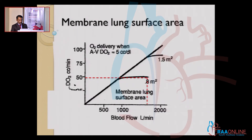This chart depicts on its x-axis the blood flow, and on its y-axis the DO2. A membrane lung with an area of 0.8 square meters will be able to deliver around 50 ml of oxygen per minute. If we increase the membrane area from 0.8 to 1.5 square meters, the oxygen delivery almost doubles to around 85 ml per minute. So one parameter that can influence oxygen delivery is the properties and surface area of the membrane or oxygenator that we are using.